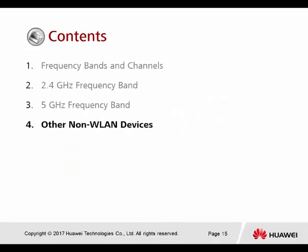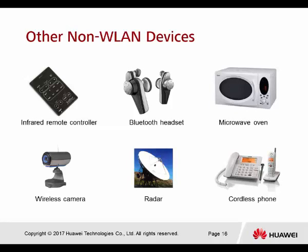Other non-WLAN devices also operate in the same frequency band and can cause interference. For example, an infrared remote controller broadcasts signals within the 2.4 GHz band, which can interfere with nearby Wi-Fi devices. Bluetooth headsets also operate in the 2.4 GHz band. Microwave ovens are a major source of interference, so try to avoid placing APs near them. Wireless cameras, radar, and cordless phones also cause interference.